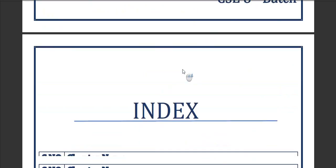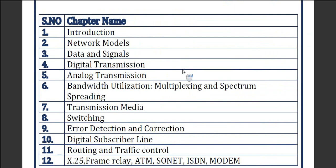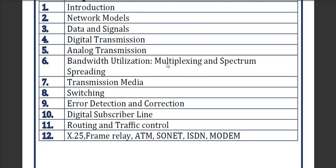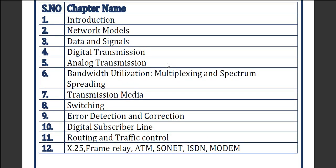Hello everyone, today we will start our lecture on data communication, which is CSC 309. In the index section, chapter-wise, the first chapter is introduction, then network model, data and signals, and so on. We are going to start with Chapter 1: Introduction.